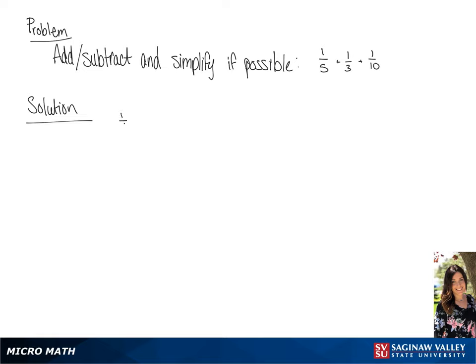Our problem is 1/5 plus 1/3 plus 1/10. The first thing we need to do is find a common denominator, which will be 30, giving us 6 over 30 plus 10 over 30 plus 3 over 30. And if we add the numerators, we will get 19 over 30.